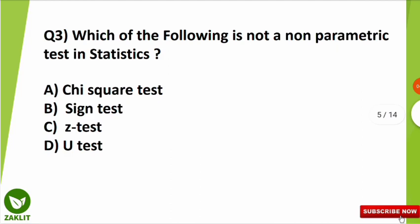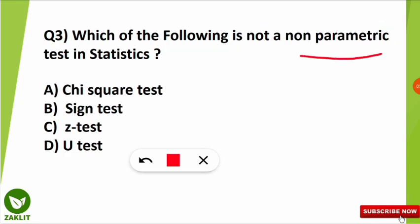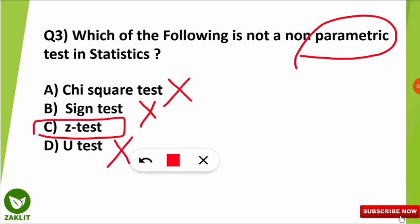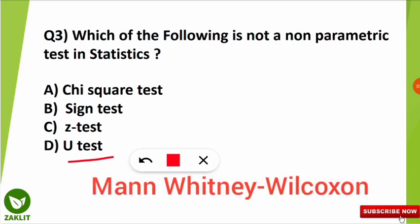The next question comes from parametric and non-parametric tests: which of the following is NOT a non-parametric test in statistics? This is a tricky question — it is actually asking which is a parametric test. Chi-square is a non-parametric test; sign test is also non-parametric; and the U test (also known as Mann-Whitney U test or Mann-Whitney Wilcoxon U test) is also non-parametric. Therefore, the Z-test is the only parametric test among the four options — it is not a non-parametric test.